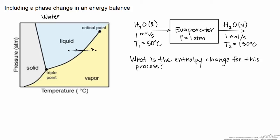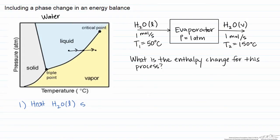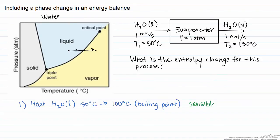In order for this to occur, we actually have three steps. Step one is that we heat the liquid water from 50 degrees C to the boiling point, which is 100 degrees C. We heat it to the boiling point because that's where the heat of vaporization is measured. This step, where heat is put in to change temperature, is what's known as sensible heat. The second step is the phase change, where all the liquid water vaporizes until we only have water vapor left. This is what's known as latent heat.